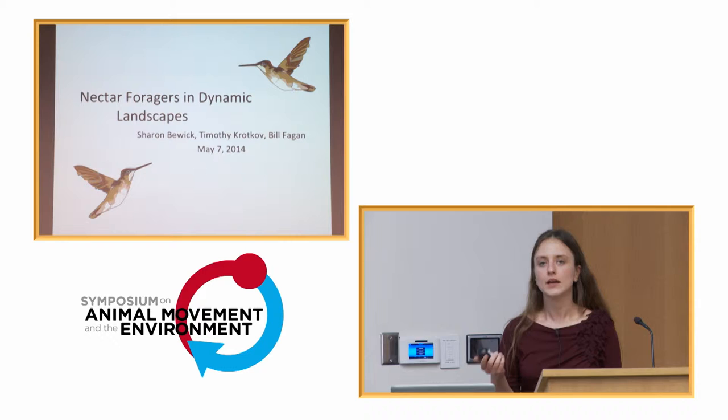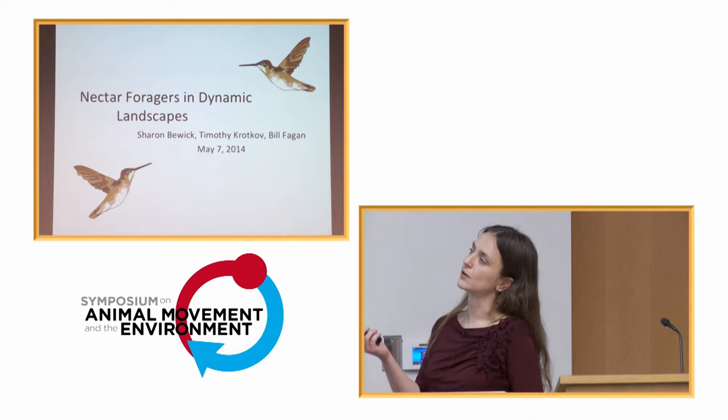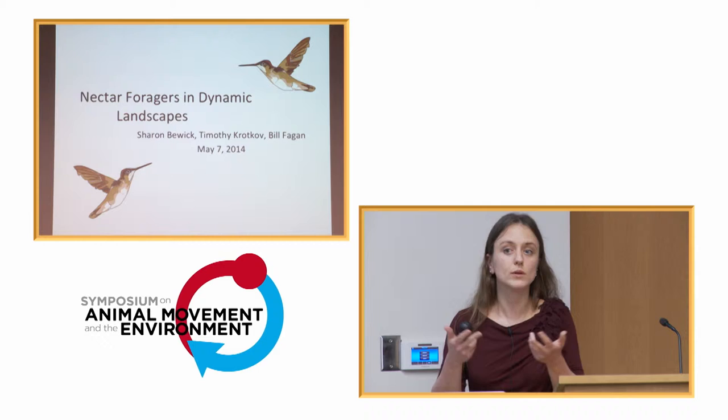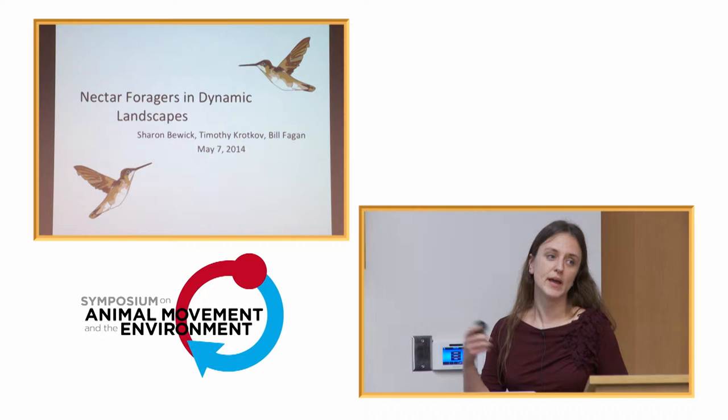I'd like to thank the organizers for having me. I'm the last speaker before coffee so I'll try not to take too long. What I'd like to talk about is nectar foragers in a dynamic landscape. Compared to a lot of what you've heard this week, we're thinking about a landscape that's changing on a much more rapid scale relative to foraging, and also in a somewhat more predictable scale, because these nectar foragers are largely going for flowers that they drain of the nectar, and the nectar slowly replenishes. What we want to understand is what type of foraging should go on and how that should depend on resource distribution and resource dynamics.